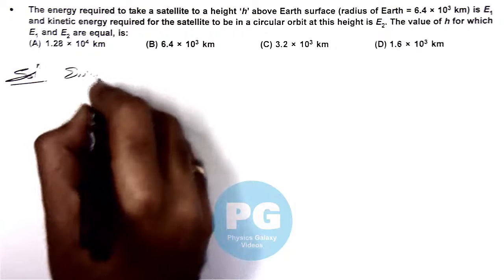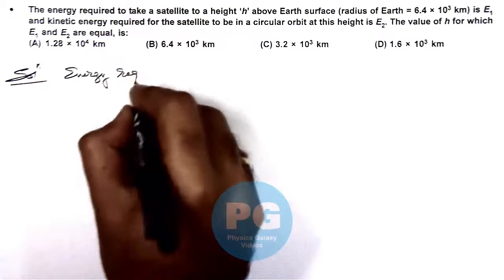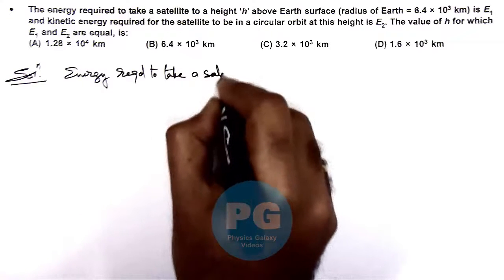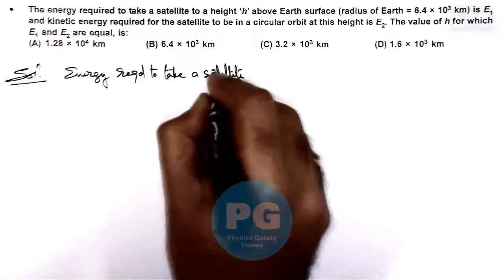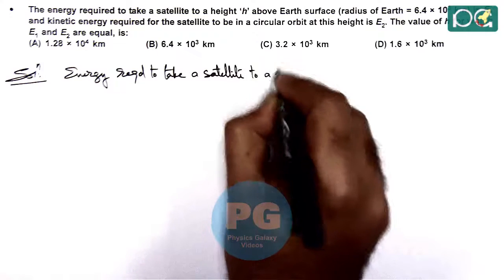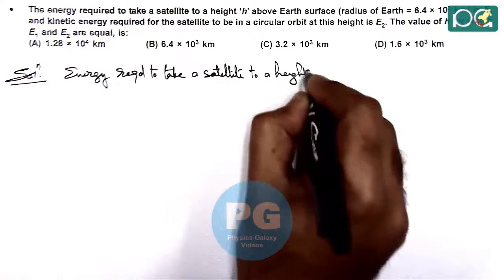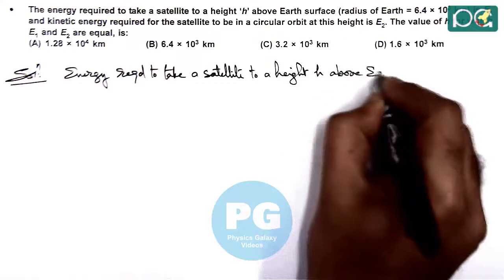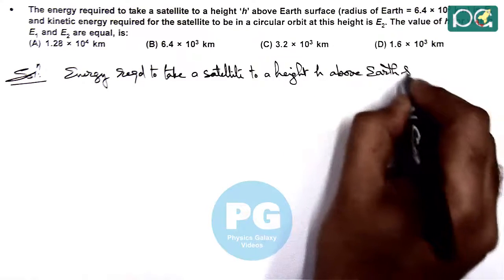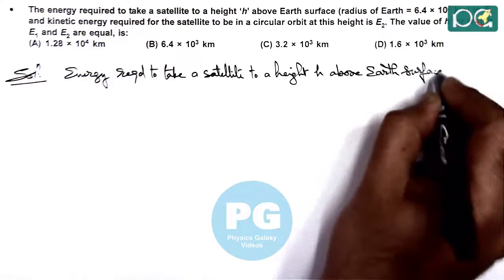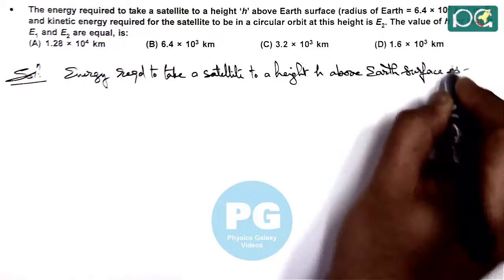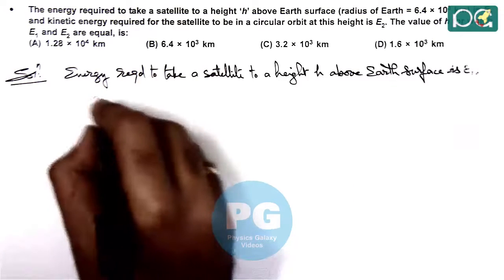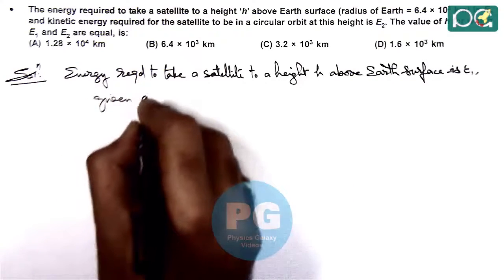So here first we can calculate the energy required to take a satellite to a height H above Earth's surface. E1 is given as, here we can write,